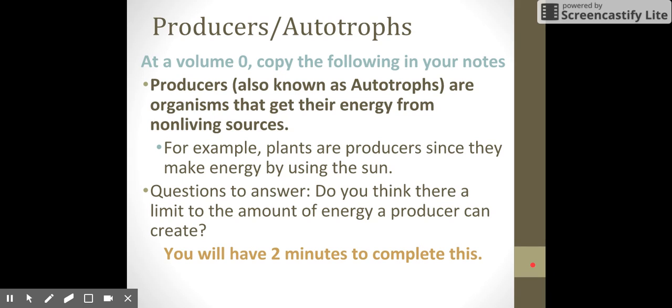Now, plants are not the only producers that exist in food chains. We have things that also chemosynthesize, meaning that they take chemical energy and use heat and other chemicals to create energy from those sources. But particularly we're going to be talking about plants and how those end up producing energy for the food chain. So the question here is, do you think that there are a limit to the amount of energy a producer can create?